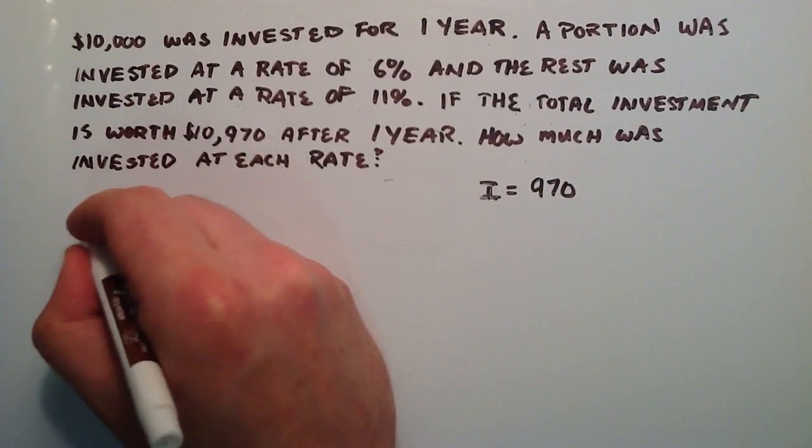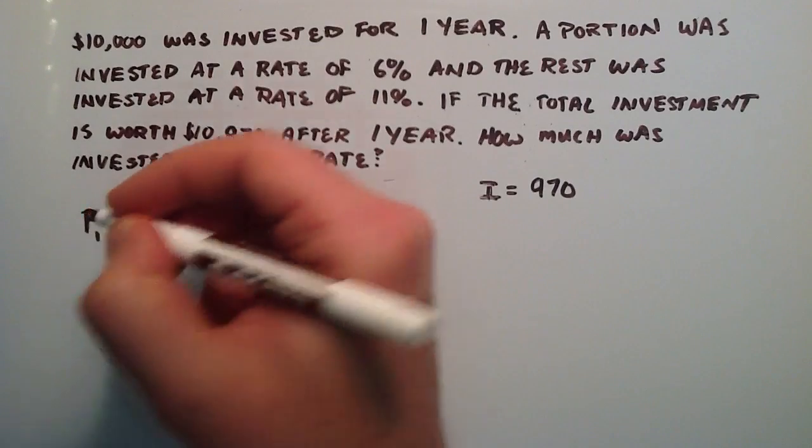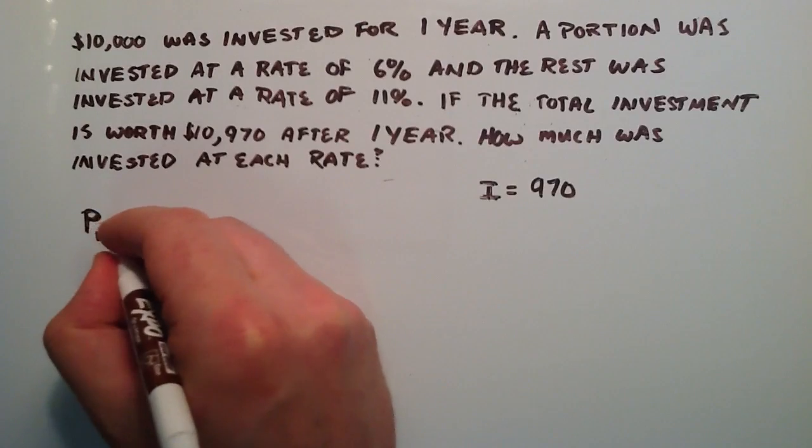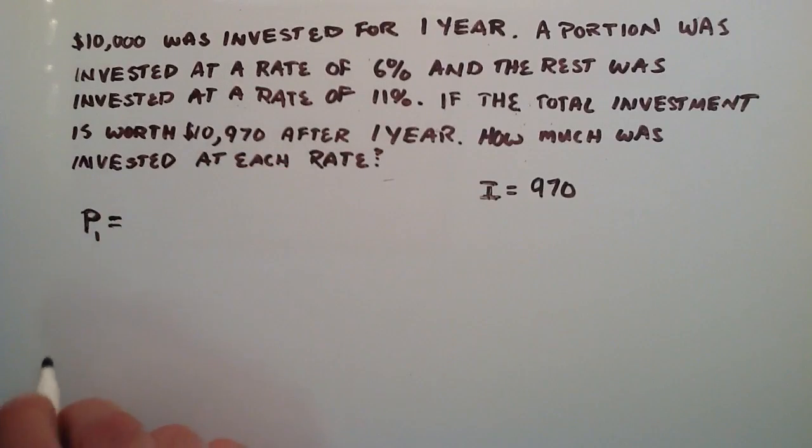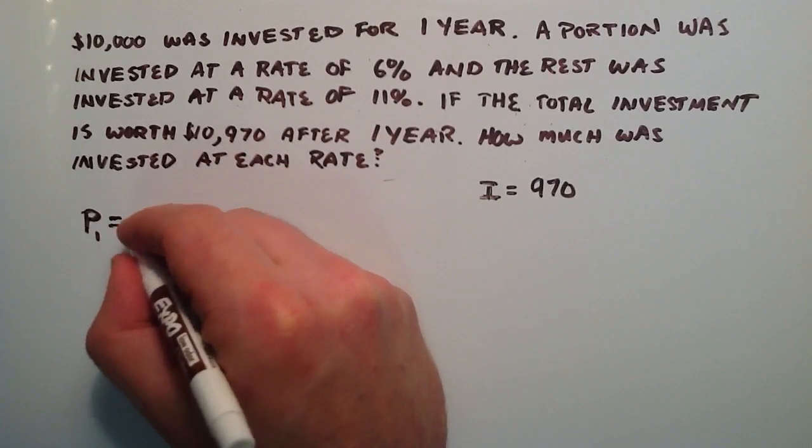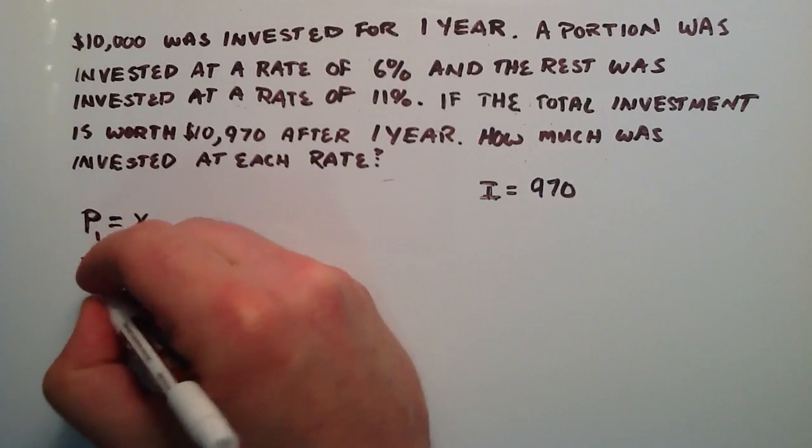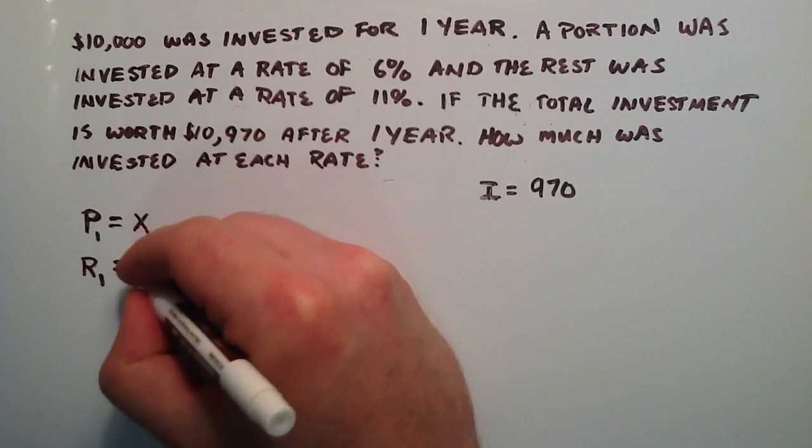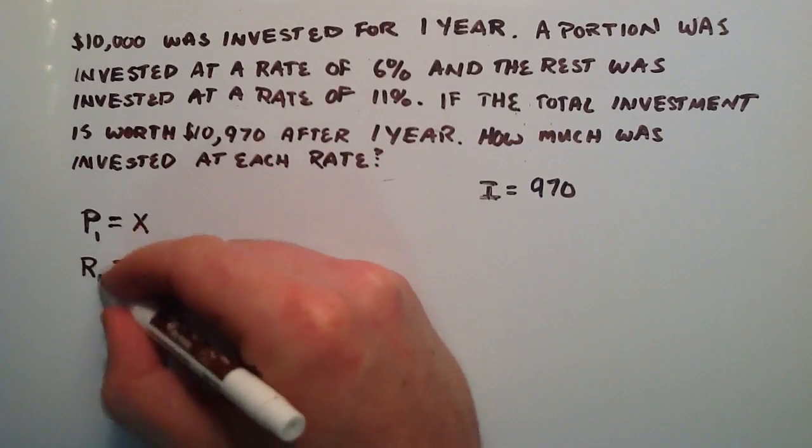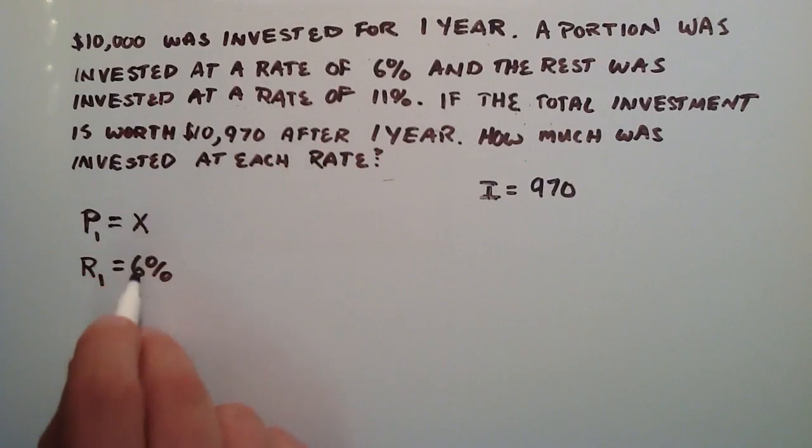So we'll just make up some variables here. We'll call P₁ the amount invested at 6%. And we don't know what that is yet, so that's going to be X. And then we'll do R₁, which is going to be the 6%. So the 1 corresponds with the 1. This is the amount at 6%.